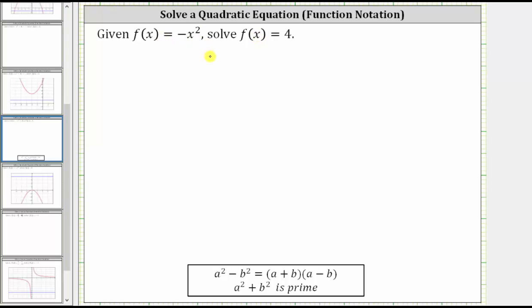So again, we are given f of x equals negative x squared. Because we want to solve f of x equals four, we now substitute four for f of x, which gives us the equation four equals negative x squared.